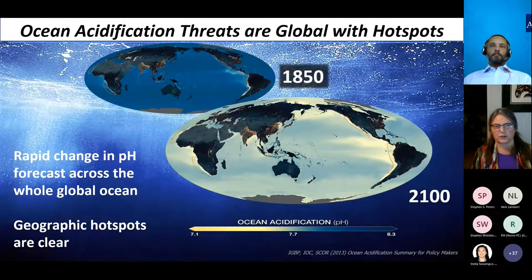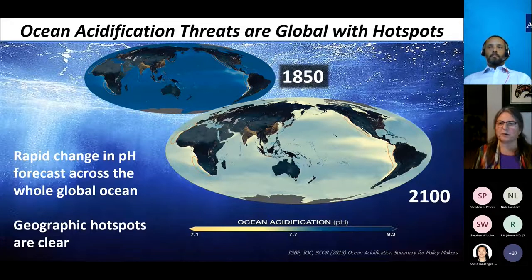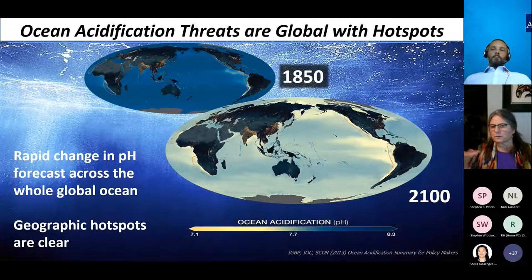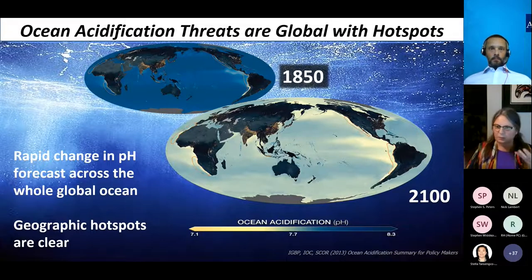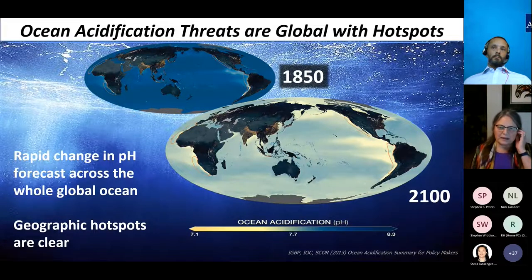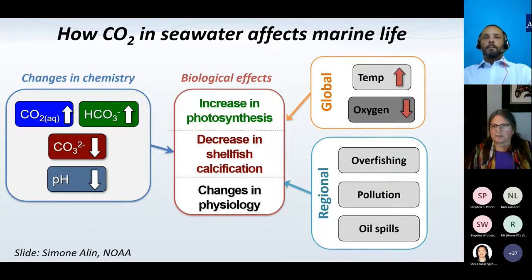This view shows changes in pH since the beginning of the industrial revolution — comparing 1850 versus 2100. There's a change in pH forecast across the whole global ocean by the end of the century, but it's not homogenous. There are hotspots due to oceanic processes such as upwelling of deep waters with more CO2 and temperature regulation. These hotspots are something we need to think about as we consider how ocean acidification is going to affect the planet.